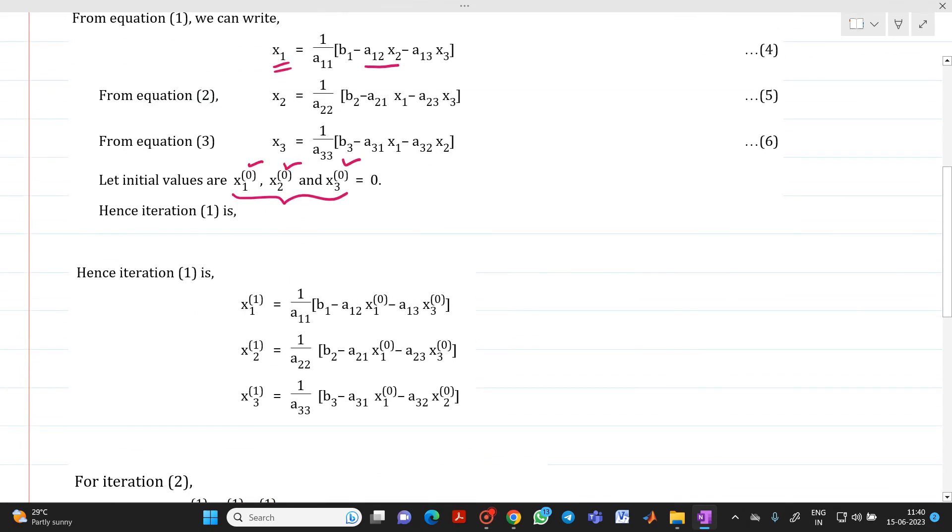From equations 4, 5, and 6, how to find out values for iteration number 1? On the left-hand side, instead of writing x1, x2, x3, we have written x1 of 1, x2 of 1, x3 of 1. The superscript 1 indicates that it will be your first iteration. Whatever initial approximation you have, you have to substitute to the right-hand side of each term.